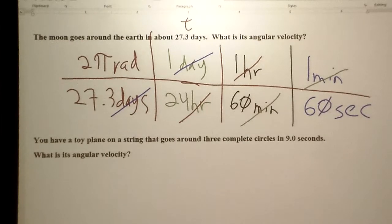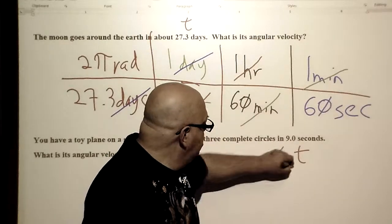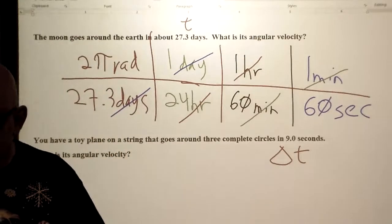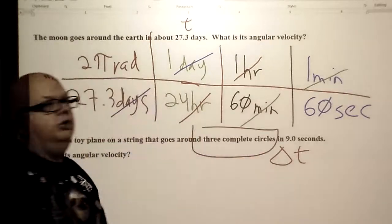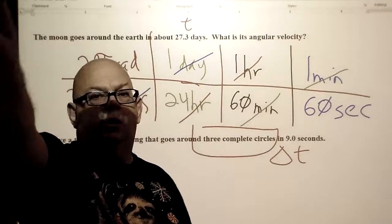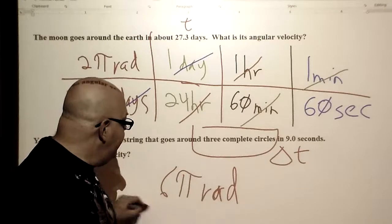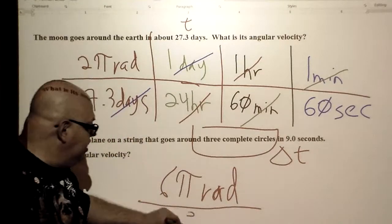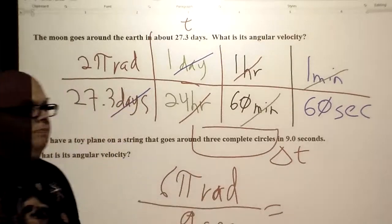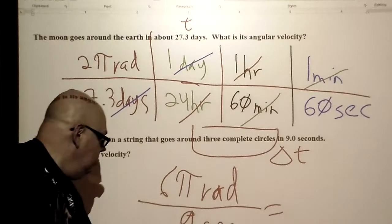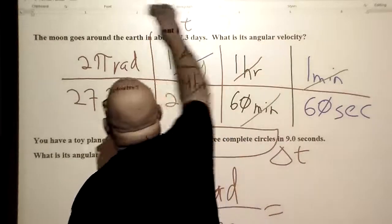A toy plane on a string goes around three complete circles in nine seconds. What is its angular velocity? Here is our delta T. Since the plane goes in three complete circles, it's 2 pi radians for one circle, which gives us 6 pi radians total. So: 6 pi radians divided by 9 seconds — and that's all you have to worry about.